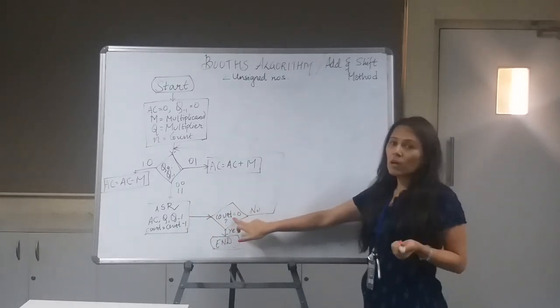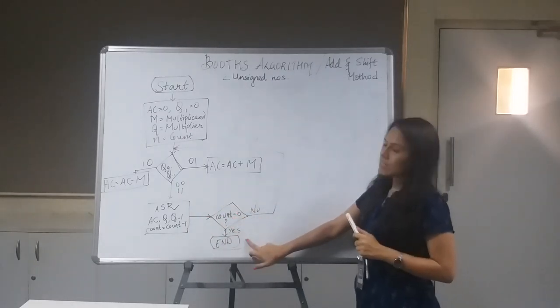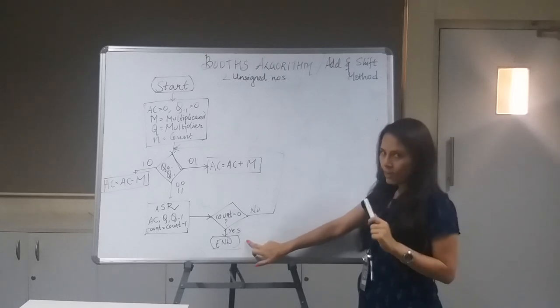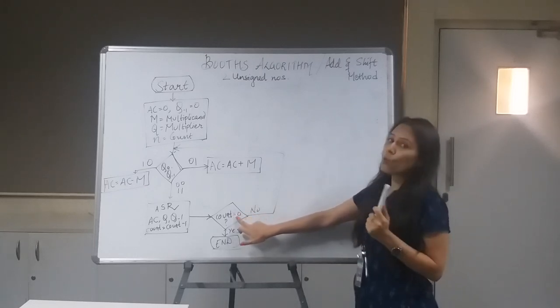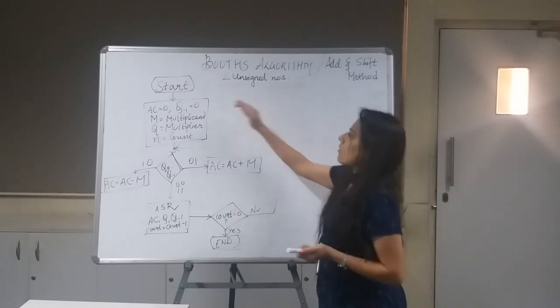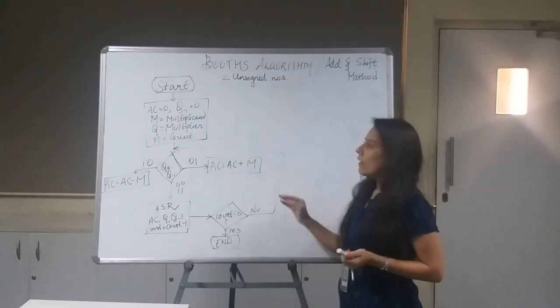Then what I'm going to do is I'll be checking with the count. If my count is zero, then my cycle is ended and I'll get the answer. And if my count is not zero, then it is going to repeat the cycle.